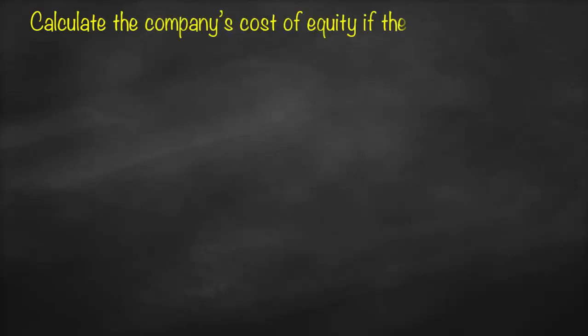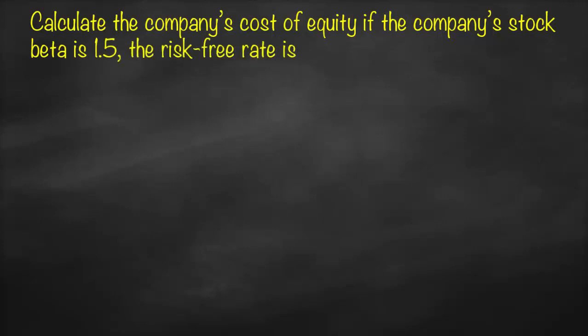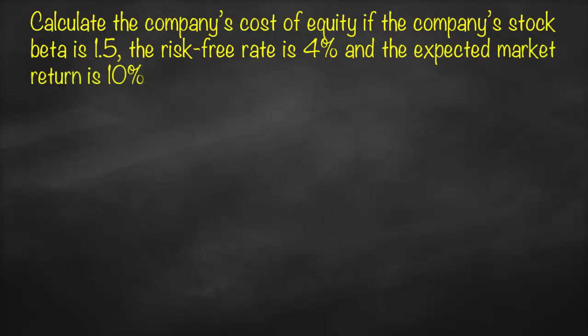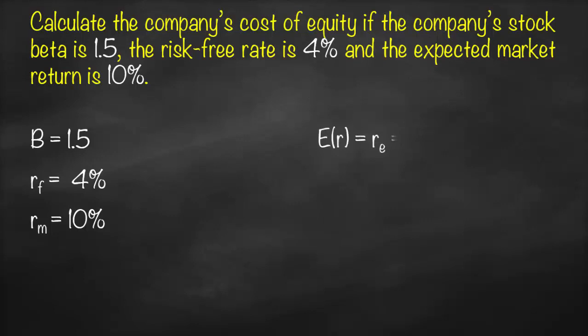Let's apply the CAPM formula on a couple of questions. Calculate the company's cost of equity if the company's stock beta is 1.5, the risk free rate is 4%, and the expected market return is 10%. The variables we have are: beta equals 1.5, risk free rate is 4%, and market return is 10%. Writing the CAPM formula: expected return or cost of equity equals risk free rate plus beta multiplied by open bracket market return minus risk free rate.